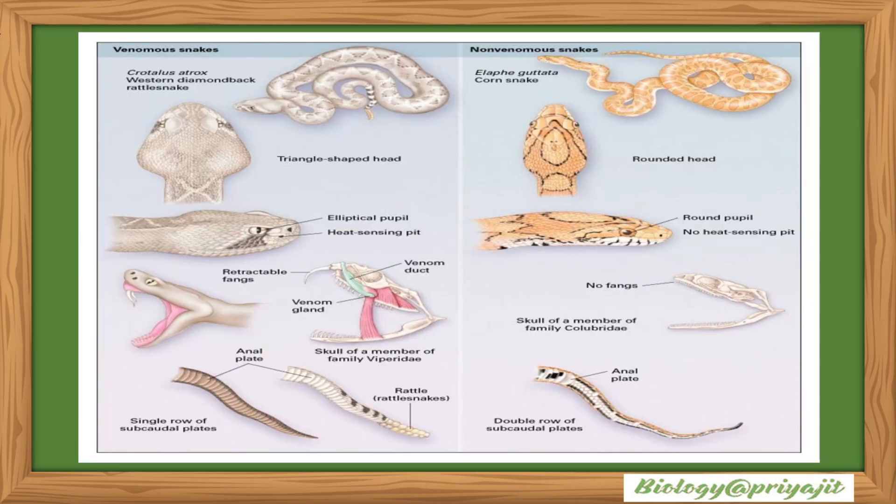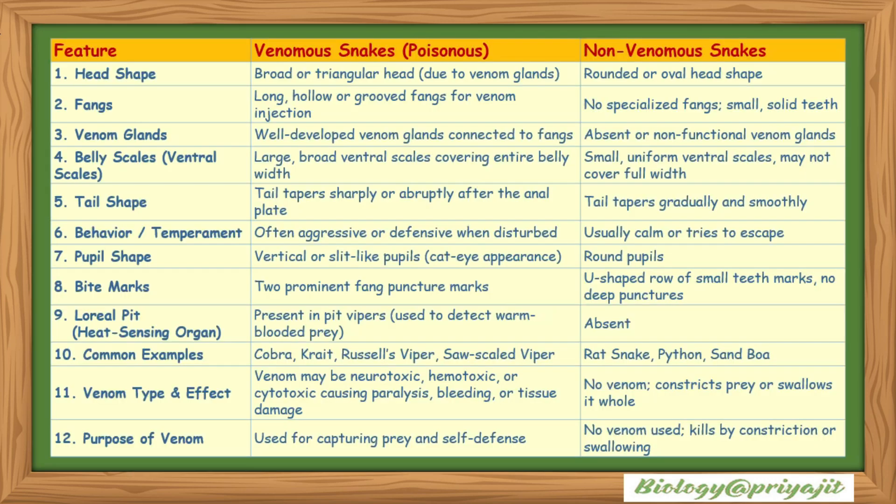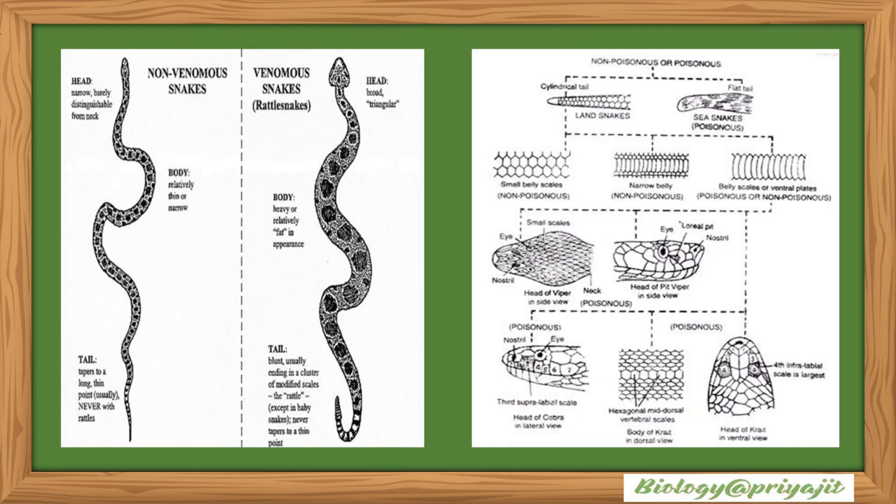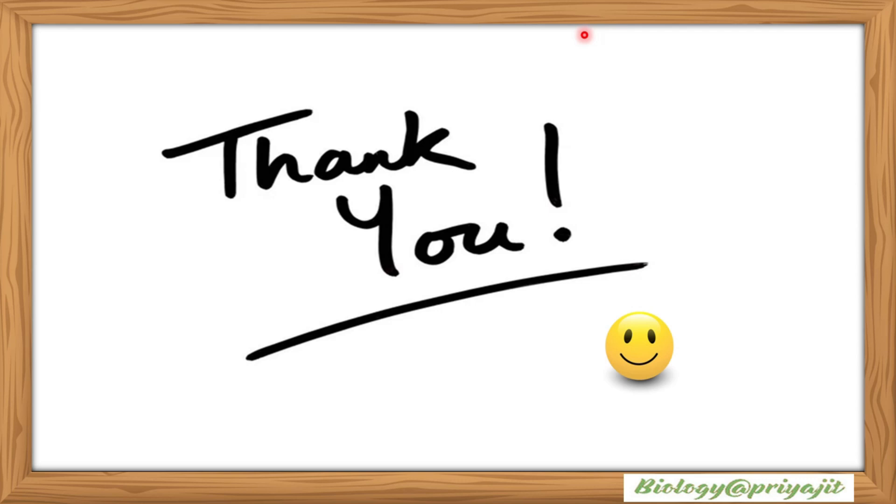Here is an image and diagram showing the differences between venomous and non-venomous snakes. To sum up: venomous snakes like the cobra or viper possess hollow fangs and venom glands to immobilize their prey, while non-venomous ones like the python rely on constriction or simple swallowing. With practice, by observing key features like head shape, body scales, and pupil type, you can easily tell who is who in the snake world.